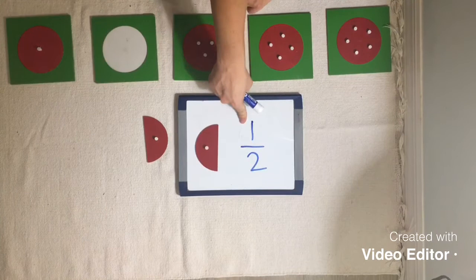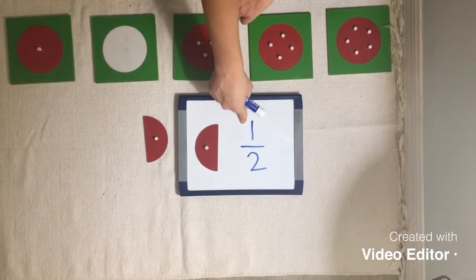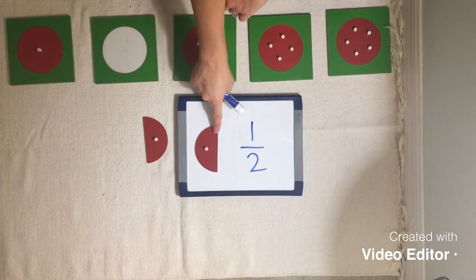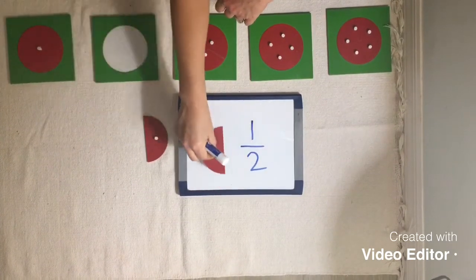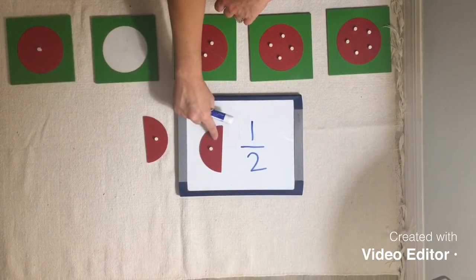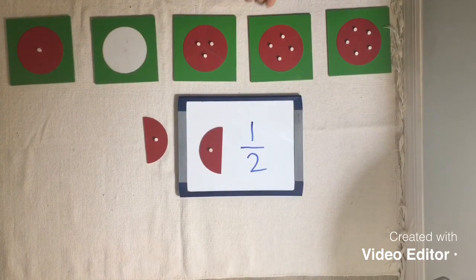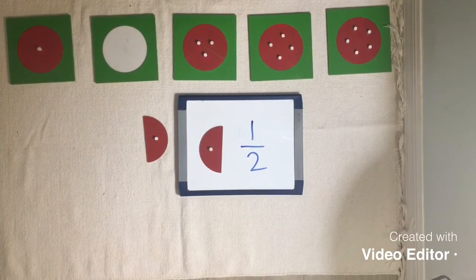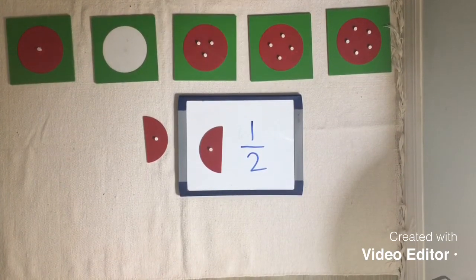The number on the top of the fraction is called the numerator. And it is the number of parts that we are seeing, using, or considering. So right now, we're just looking at one of the halves. One of the halves. One part that this fraction has been divided into equally. So again, this is one half. This says one half.